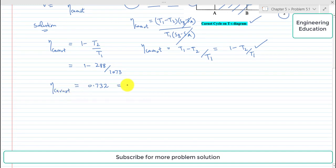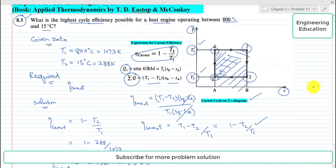Further if we write it in percentage, so it will become 73.2 percent which is the highest cycle efficiency for this cycle.